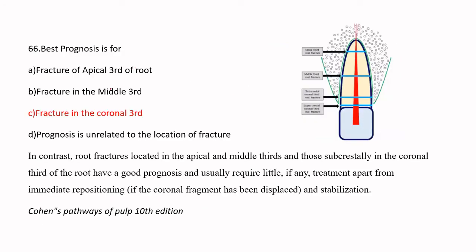The best prognosis is for coronal third fracture. For apical third fracture, the segment can be left in place and root canal therapy completed on the remaining structure. Middle third fractures can use intra-radicular splinting but have poorer prognosis. Coronal third fracture offers the best prognosis through immediate repositioning of the coronal segment and stabilization using splinting.